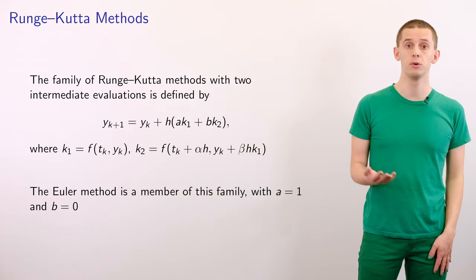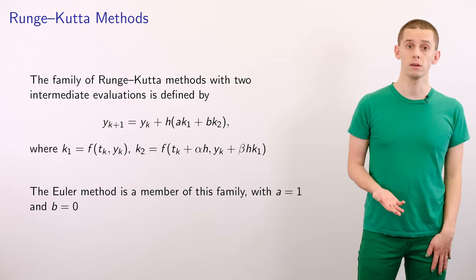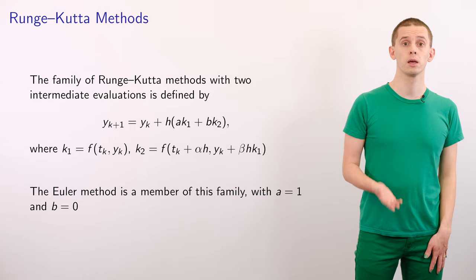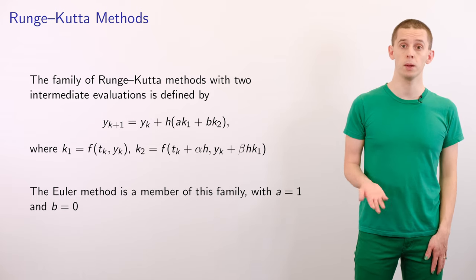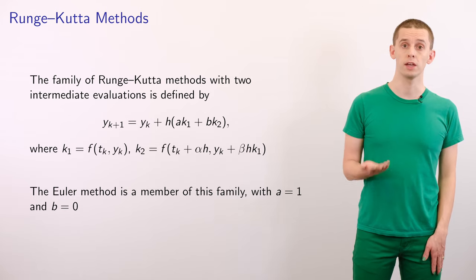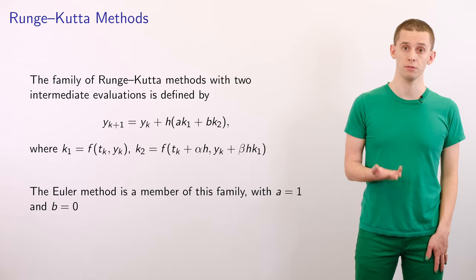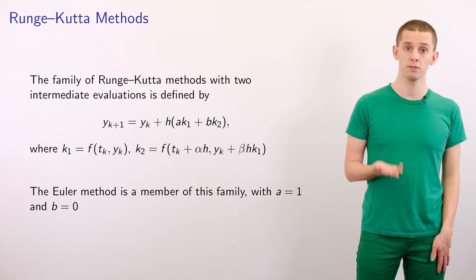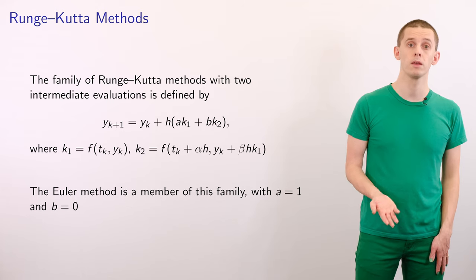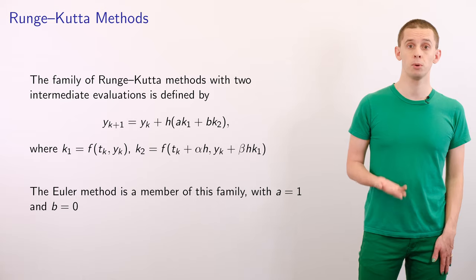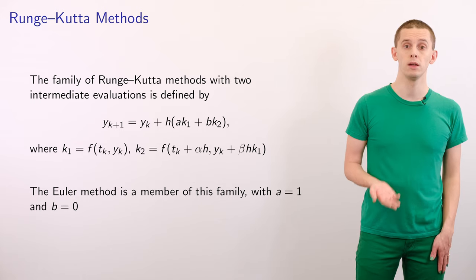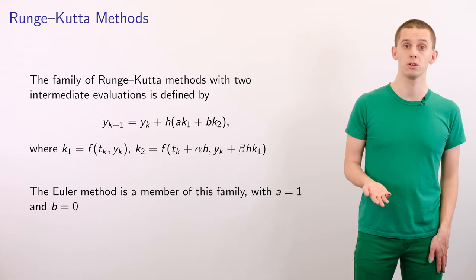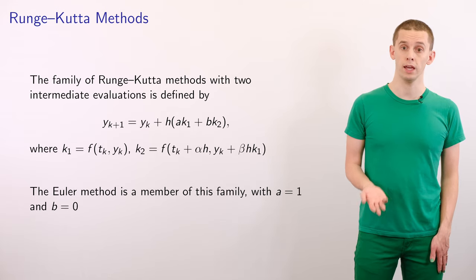Let's now look at the general form of Runge-Kutta methods with two intermediate evaluations. Our numerical solution y_{k+1} can be written in terms of y_k plus h times a multiplied by k1 plus b multiplied by k2, where k1 and k2 are our two intermediate evaluations of f. Specifically, k1 evaluates f at the start of the interval: k1 = f(t_k, y_k), and k2 evaluates f at some point within our interval: k2 = f(t_k + αh, y_k + βhk1).